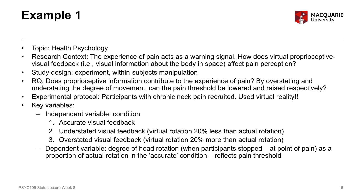The key variables here: the independent variable is our grouping variable, our condition variable, and there are three different conditions that participants experience. The first is accurate visual feedback, which is our control condition where nothing in particular was manipulated. The second and third conditions involved manipulating the difference between people's actual movement in space and what the movement looks like using a virtual reality headset. The dependent variable is measuring individuals' degree of head rotation — participants were asked to move their head and stop when they experienced pain, representing their pain threshold.